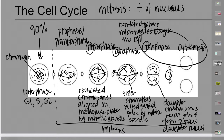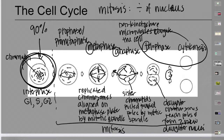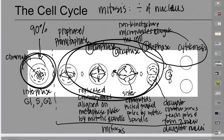To recap: the cell cycle describes the life cycle of a cell — 90% is interphase, then it goes from one cell to two cells when it gets the signal to divide. That signal is tightly controlled by two proteins — cyclins and cyclin-dependent kinases — operating at biological checkpoints. Within mitosis there are five stages of nuclear division, and at the end of cytokinesis you have two identical daughter cells that enter back into interphase.